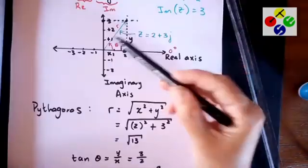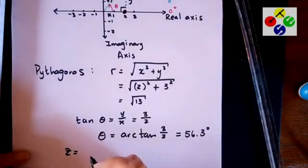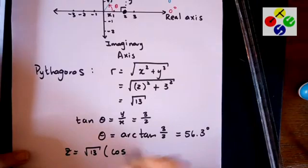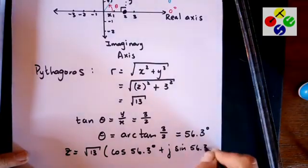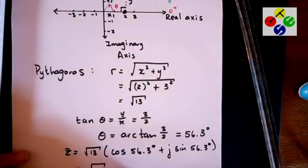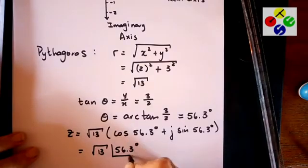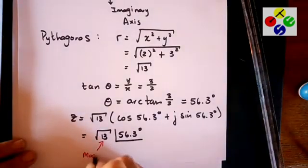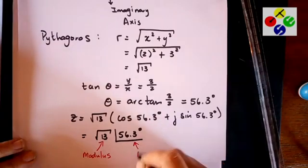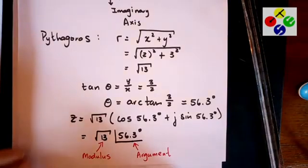Then we've got R and we have theta, which means we can write this in polar form. So then Z is going to be R, which is the square root of 13, times cos 56.3 degrees plus j sine 56.3 degrees. Which is the same as writing it as square root of 13 angle 56.3 degrees. So that is your modulus and that is the argument of your complex number.